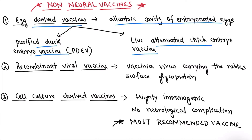The second type is recombinant viral vaccine. In this, the vaccinia virus carries the rabies surface glycoprotein on its surface. It is currently in the developmental phase.